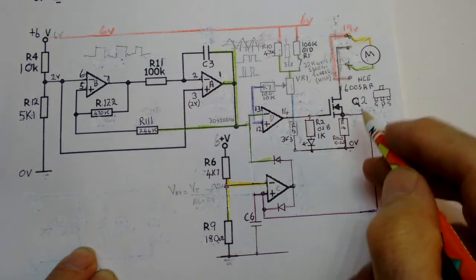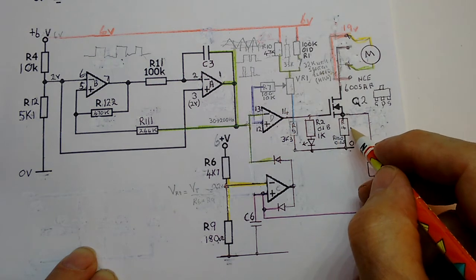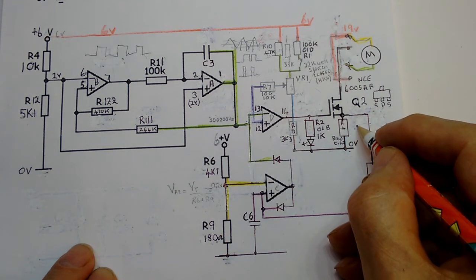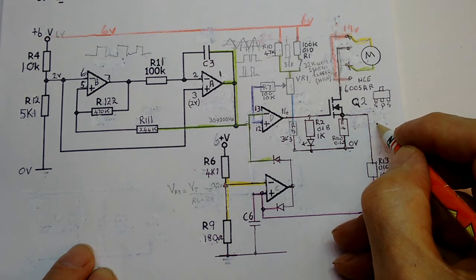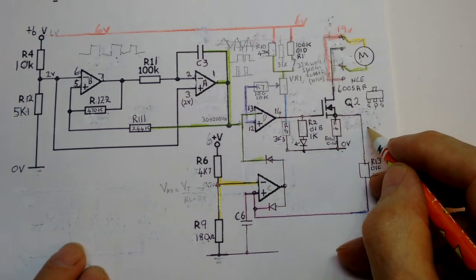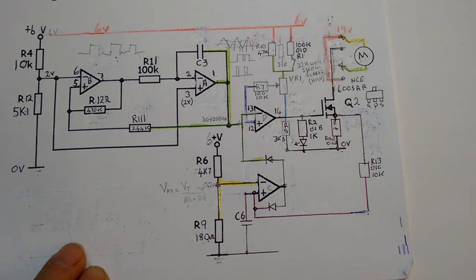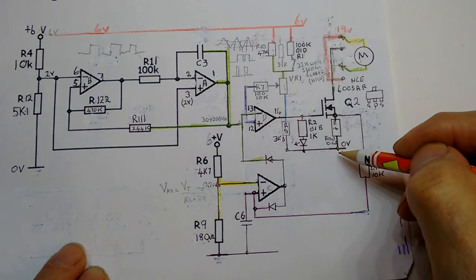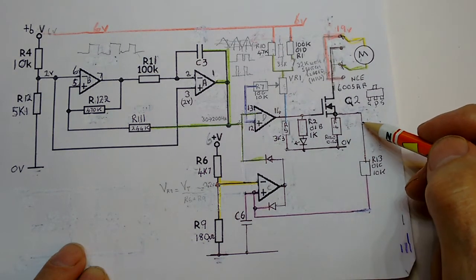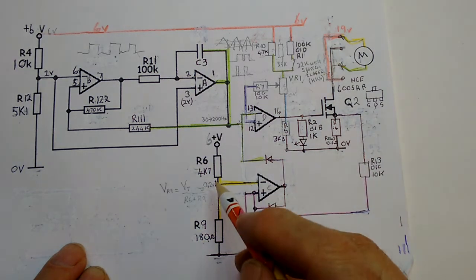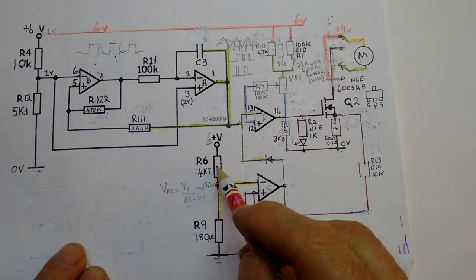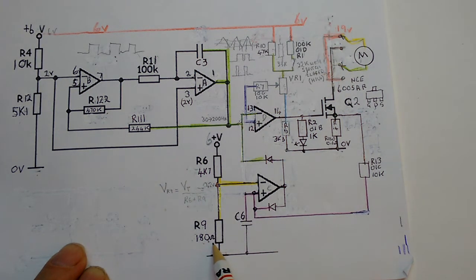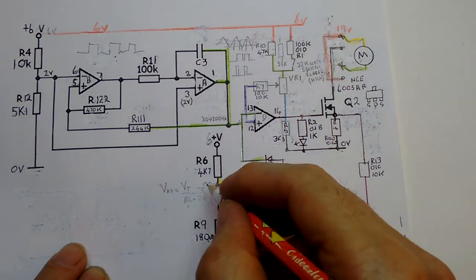Because V equals I times R, and if R is very small, then V is going to be small. So that then feeds back around here. Now if we get too large a current flowing through here, the voltage across this will get greater. So if we come back down here, we see that once again we've got a potential divider - a 4k7 and 180 ohms.